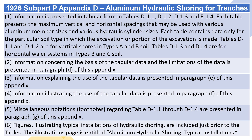Information concerning the basis of the tabular data and the limitations of the data is presented in paragraph D of this appendix. Information explaining the use of the tabular data is presented in paragraph E of this appendix. Information illustrating the use of the tabular data is presented in paragraph F of this appendix. Miscellaneous notations and footnotes regarding tables D1.1 through D1.4 are presented in paragraph G of this appendix.